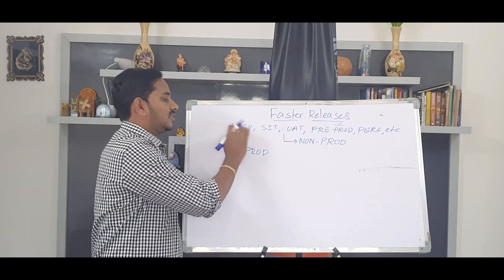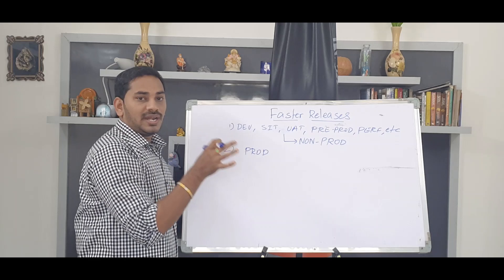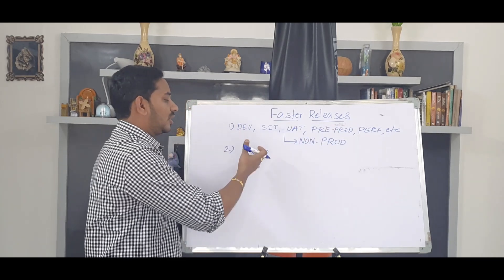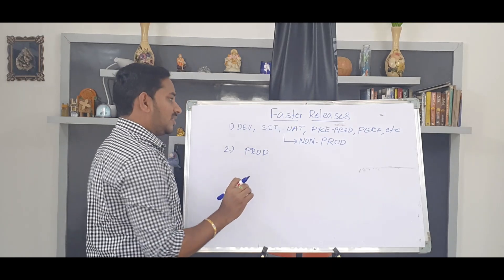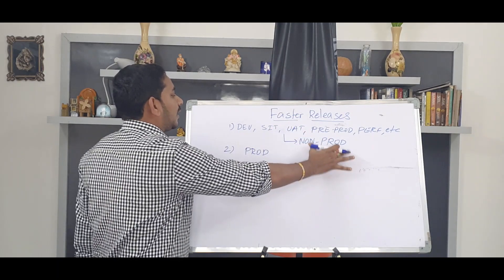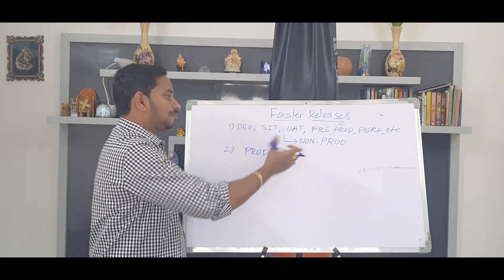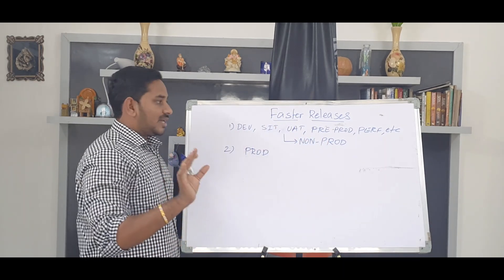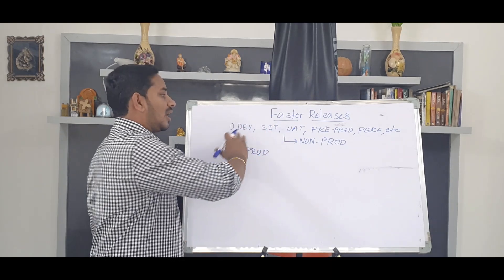There are two types of developers. Developers use a Dev environment to build and test the application. The next environment is SIT, where there is a dedicated testing team. After SIT and UAT comes pre-production, which mirrors the production environment. There is also a performance environment to test under high load. Once all testing is complete, you deploy to production. DevOps engineers manage all these environments.